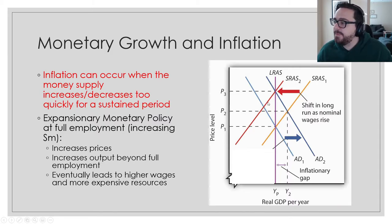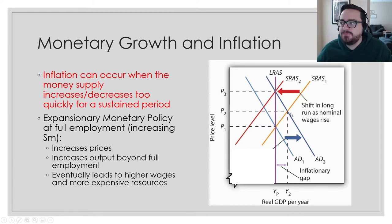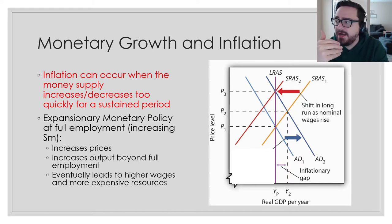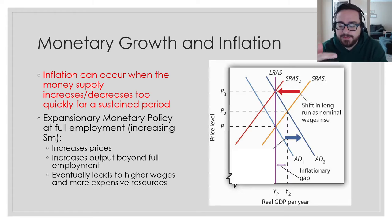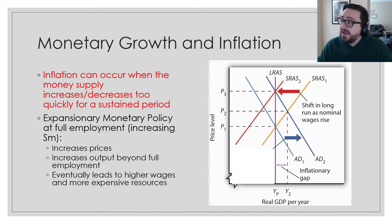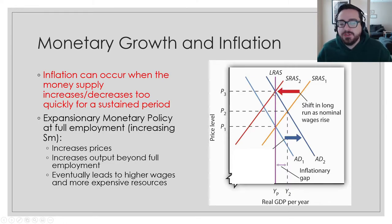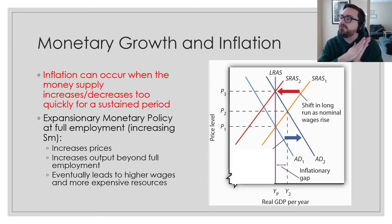We move into an inflationary gap. We want to make sure we get the complete picture — the long-run part. In the long run, as those prices start to rise, prices and wages are going to need to rise accordingly. It's not just the price of goods; it's the price of resources too. If resources become more expensive and wages need to go up because everything's getting more expensive, that makes it harder for businesses. So SRAS decreases to get back to equilibrium — that's the long-run self-adjustment from unit three.